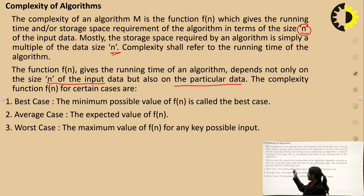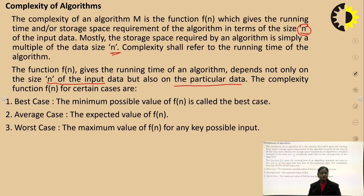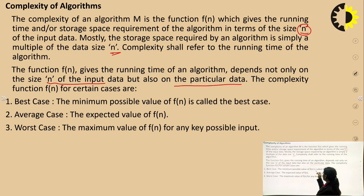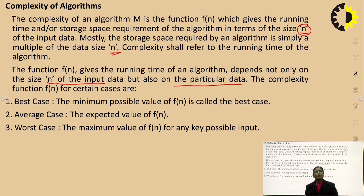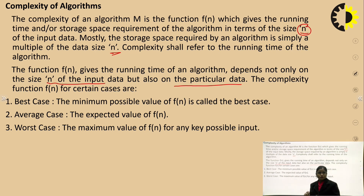The time complexity function f(n) has three cases: first is the best case — the minimum possible value of f(n). For example, in a sorting algorithm, the best case is when the elements are already sorted, so it takes very little time.